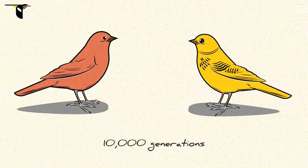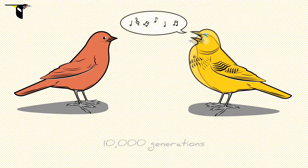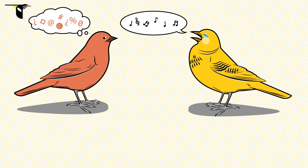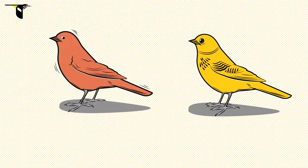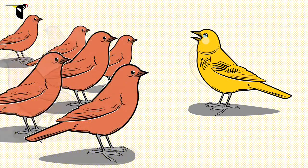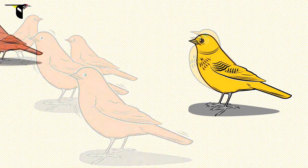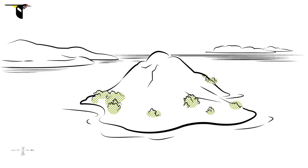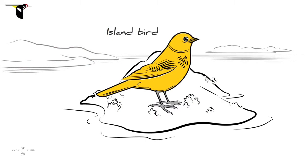What if we fast forward again to 10,000 generations of isolation? This time, the female doesn't even recognize the male's song and is completely uninterested. If this female's mating preferences are widespread in the population, we now have two bona fide species: mainland and island.